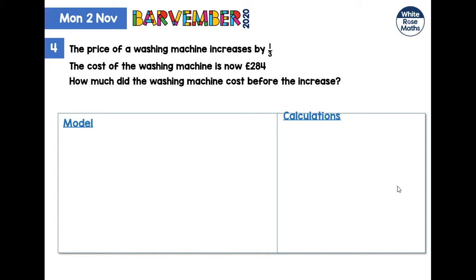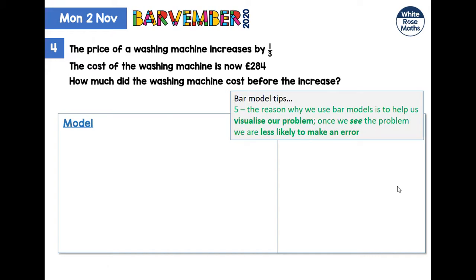Okay, final question — question four. A little tip here: don't lose sight of what we're doing. We're trying to visualize our problem, and once we can see it, we find these problems easier to solve. One reason they're easier is that we're less likely to make an error. In a question like this — with a third and 284 — many students are going to make the mistake of calculating one third of 284. Let's see how our model handles it.